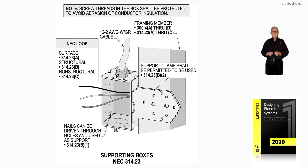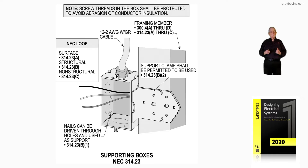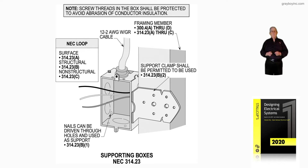Chapter 13 deals with supporting boxes, wiring methods, and so forth. This illustration illustrates supporting boxes in accordance with NEC 314.23. In the illustration we see a bracket that supports the box to the framing member. There are different ways of supporting these boxes — this is just one method shown using a support clamp designed for such use in accordance with 314.23(B)(2).